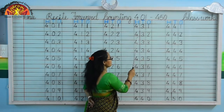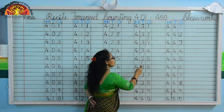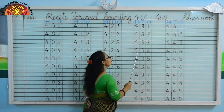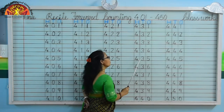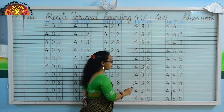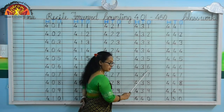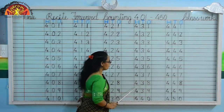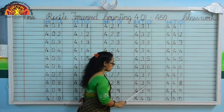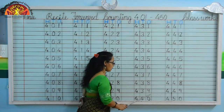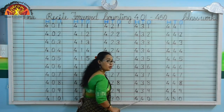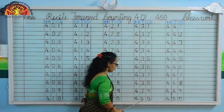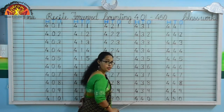Next is 432, 433, 434, 435, 436, 437, 438, 439, 440.